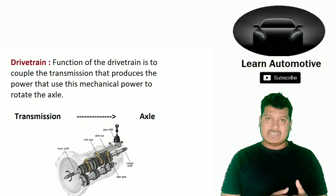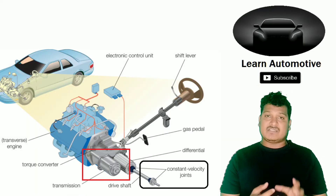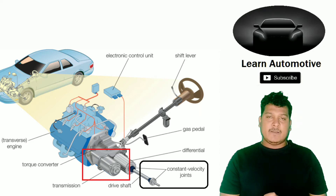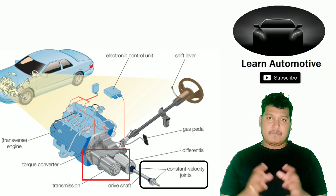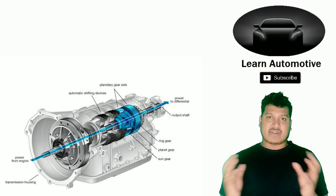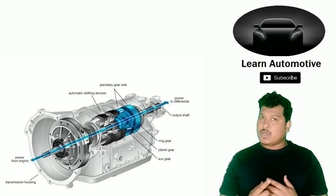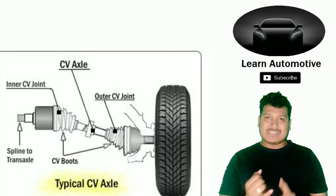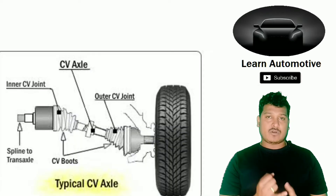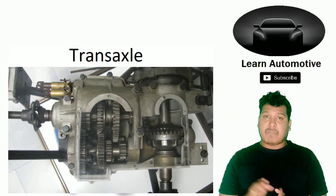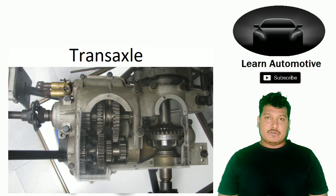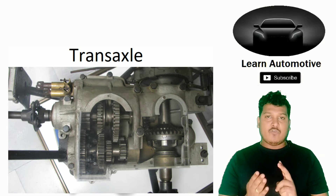The drive train has components such as the transmission, differentials, U-joint, CV joint, axle, and drive shaft. These are the main components that play a crucial role in the drive train. Note that the engine or motor is not included here, because those come under the powertrain — drive train and powertrain are different.